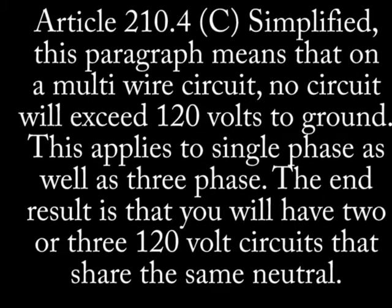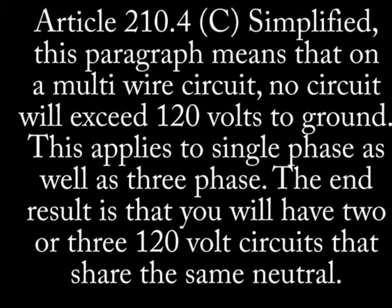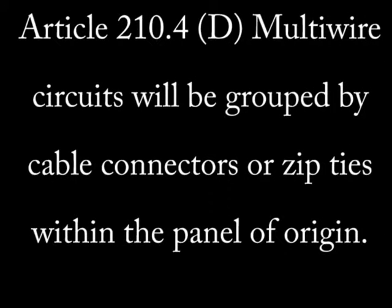Article 210.4 section C. Simplified, this means that a multi-wire circuit is not the same as a two-pole 240-volt circuit or a three-wire circuit exceeding 120 volts. It strictly applies to independent 120-volt circuits that use a common grounded conductor or neutral to complete two or more 120-volt circuits.